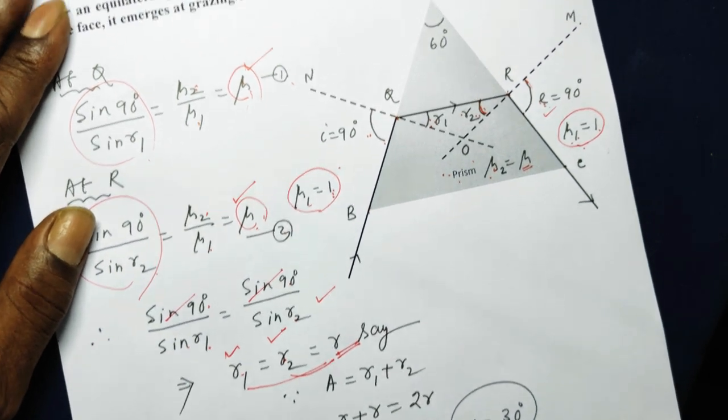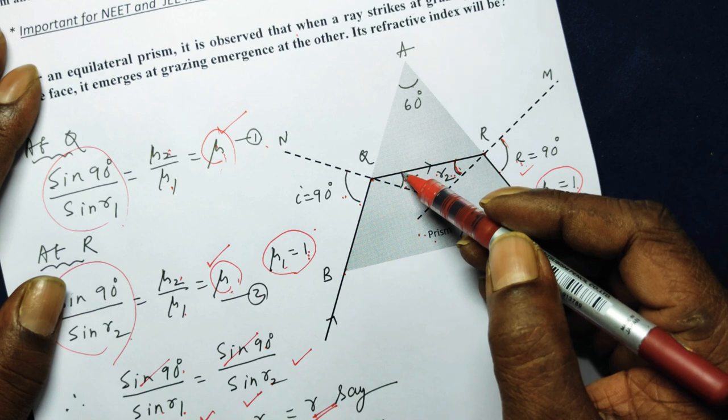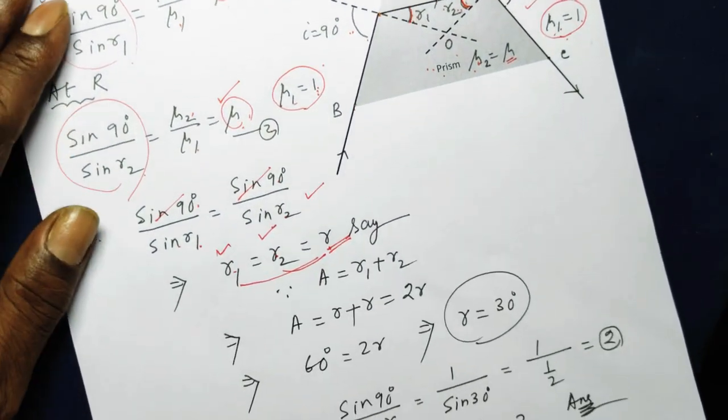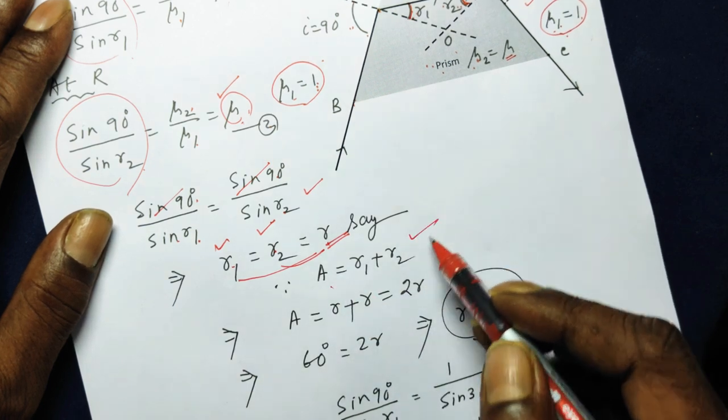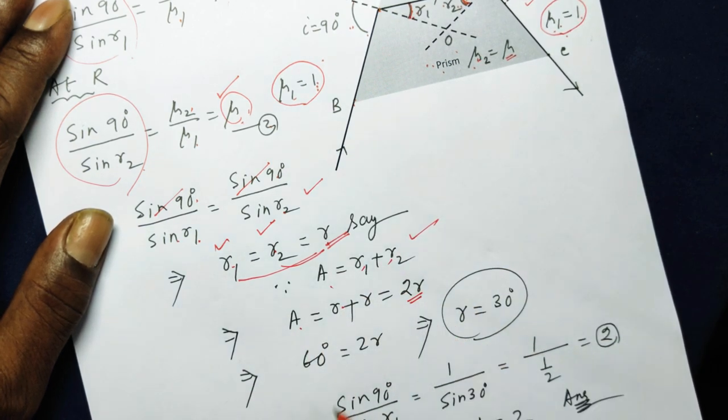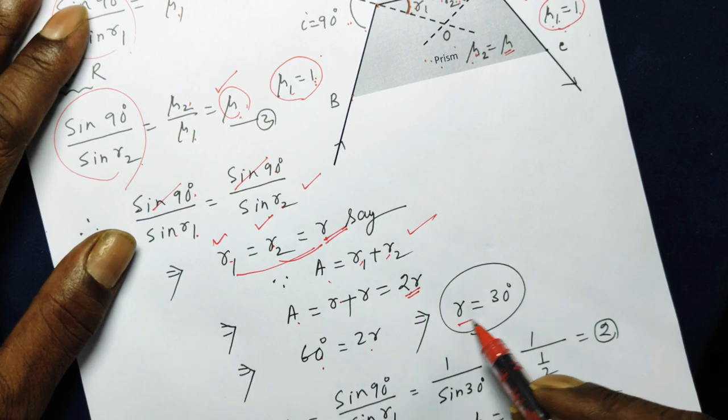And we know for a prism, this angle A is always equal to this angle plus this angle. That is, A is always equal to R1 plus R2. Therefore, A is equal to R plus R, that is 2R. And since A is given as 60, so 2R is equal to 60, so R is equal to 30.